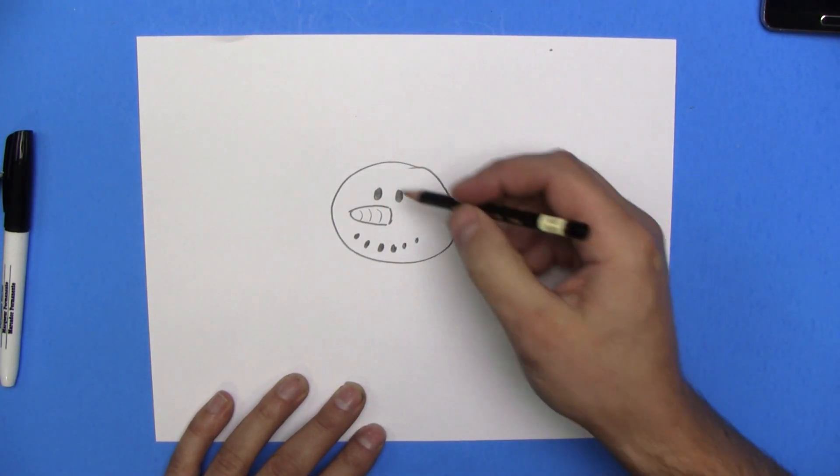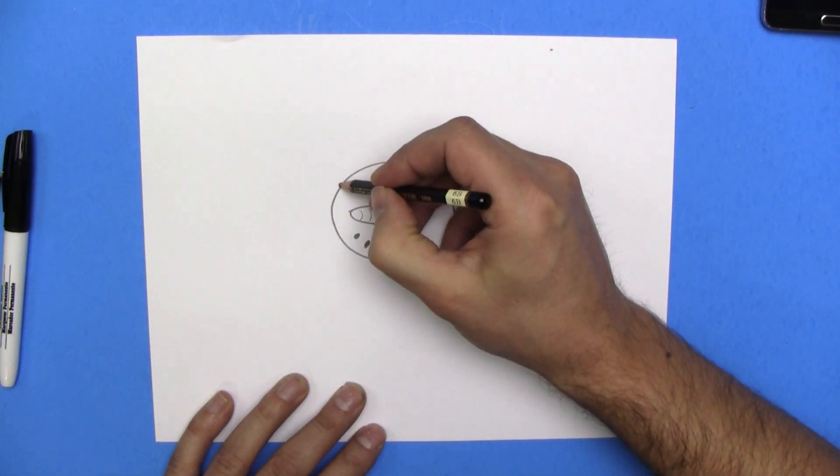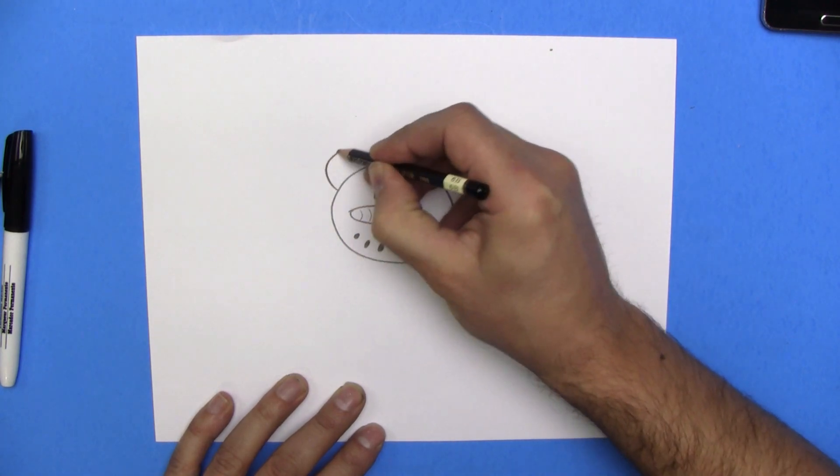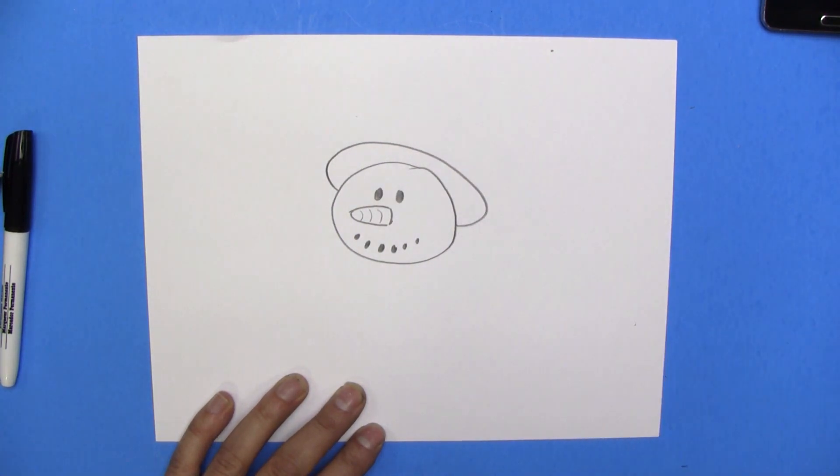Next up, we're going to do his hat. We're going to do a swooping line around like this. So, we're just going to go swoop. There we go. That is his hat. Well, it's the brim of his hat.